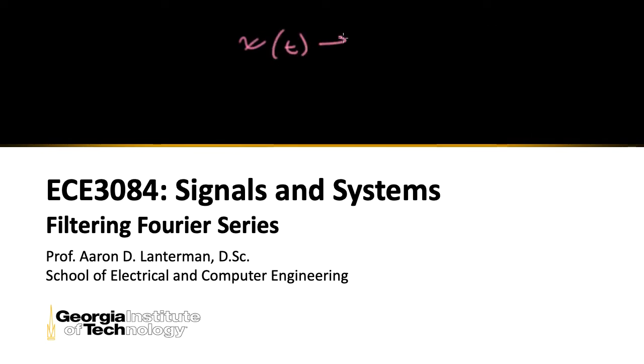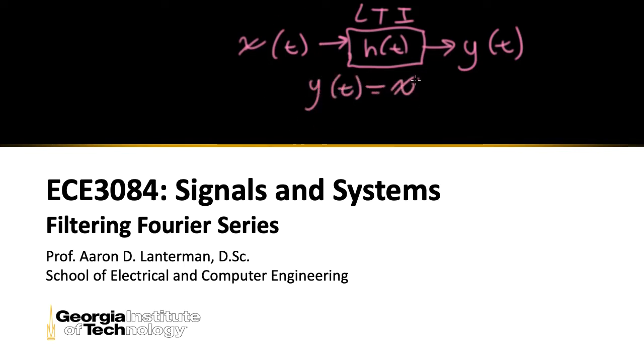Suppose we have a signal going into a system with the impulse response h(t). By me saying that it has an impulse response h(t), I'm already implying that it's a linear time invariant system, but I should explicitly state it, and we get some output y(t). In general, this is a fairly tricky thing. We know that we can get the output by convolving the input with the impulse response, but as we've seen, this could be a fairly difficult operation.